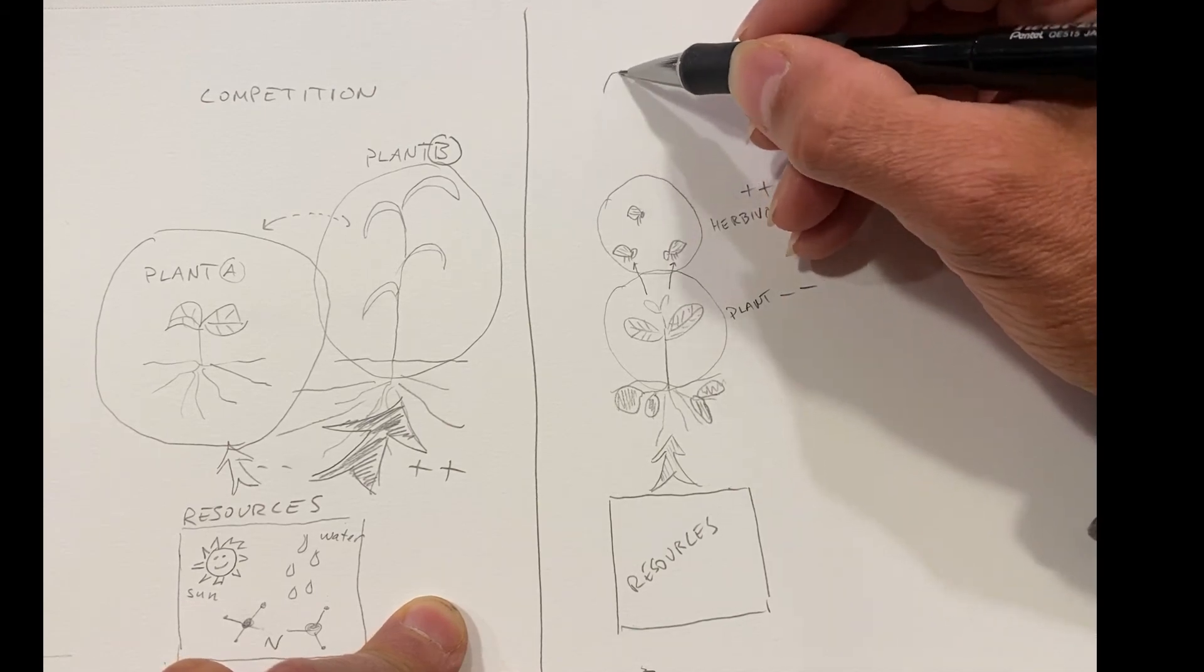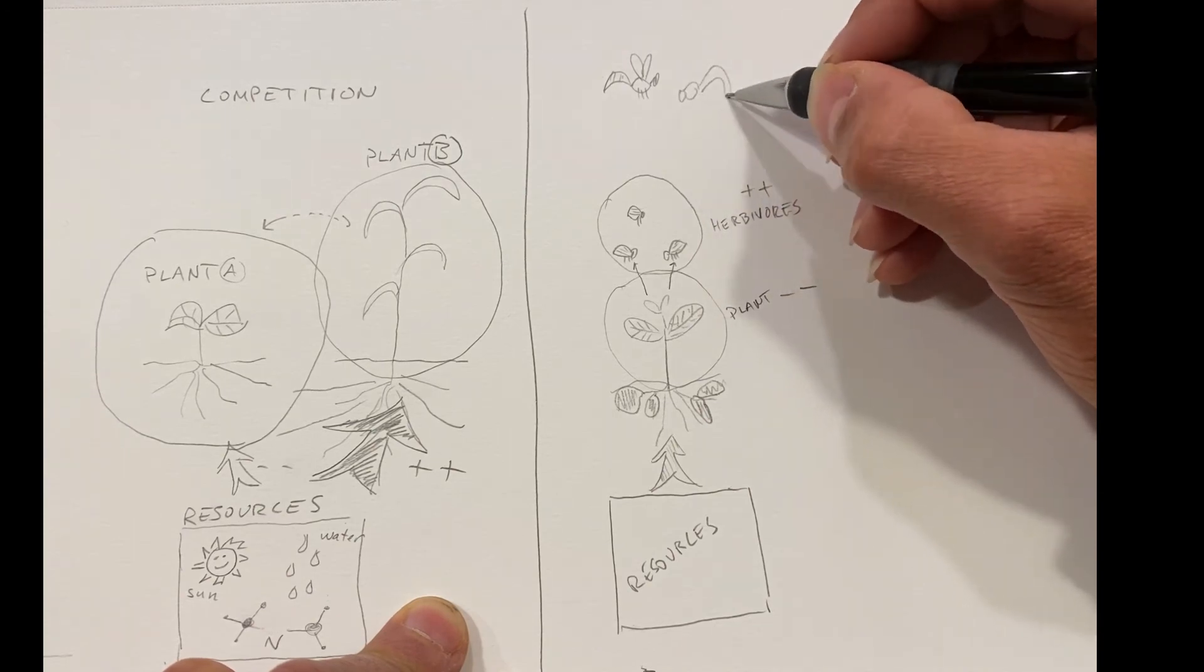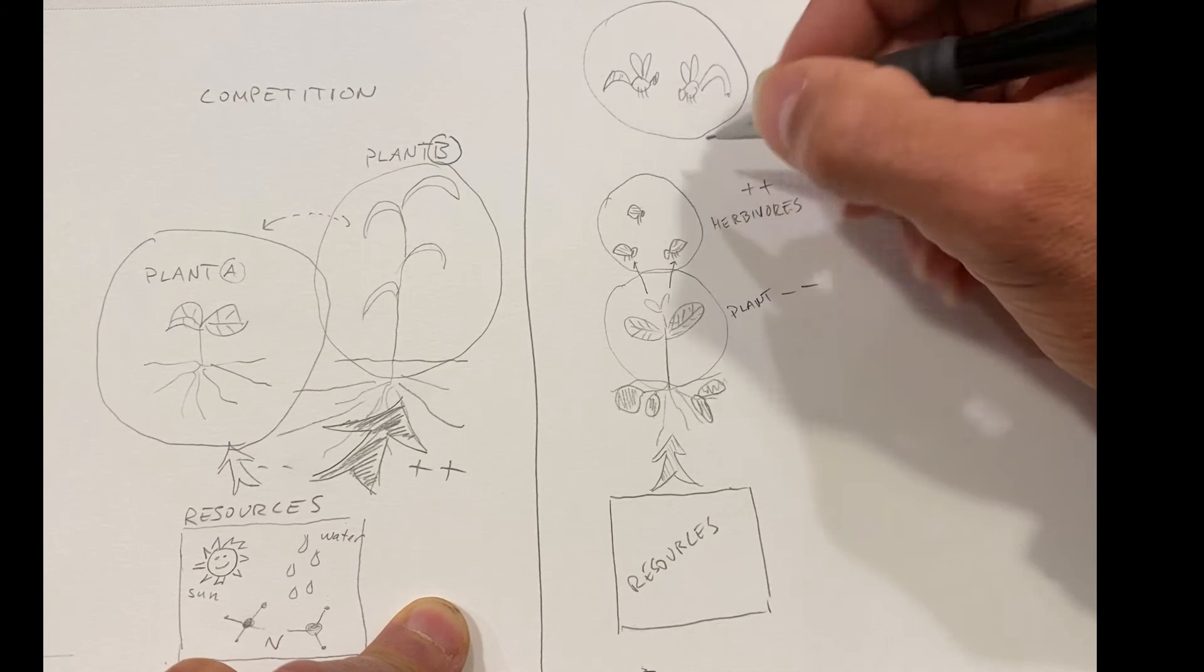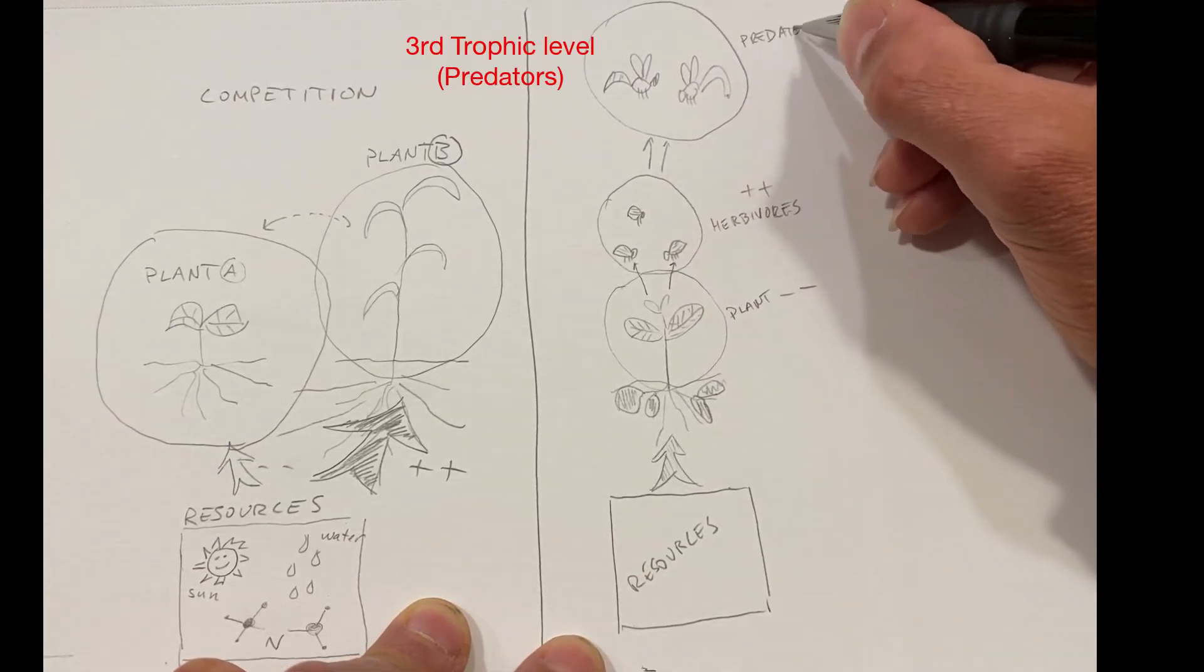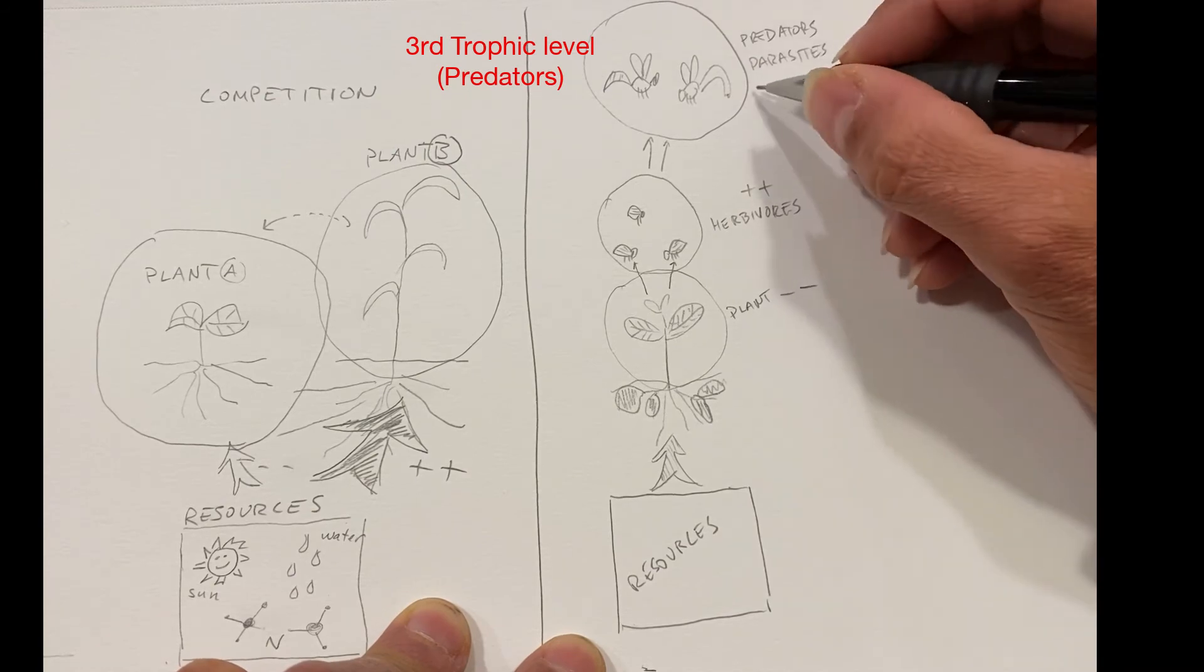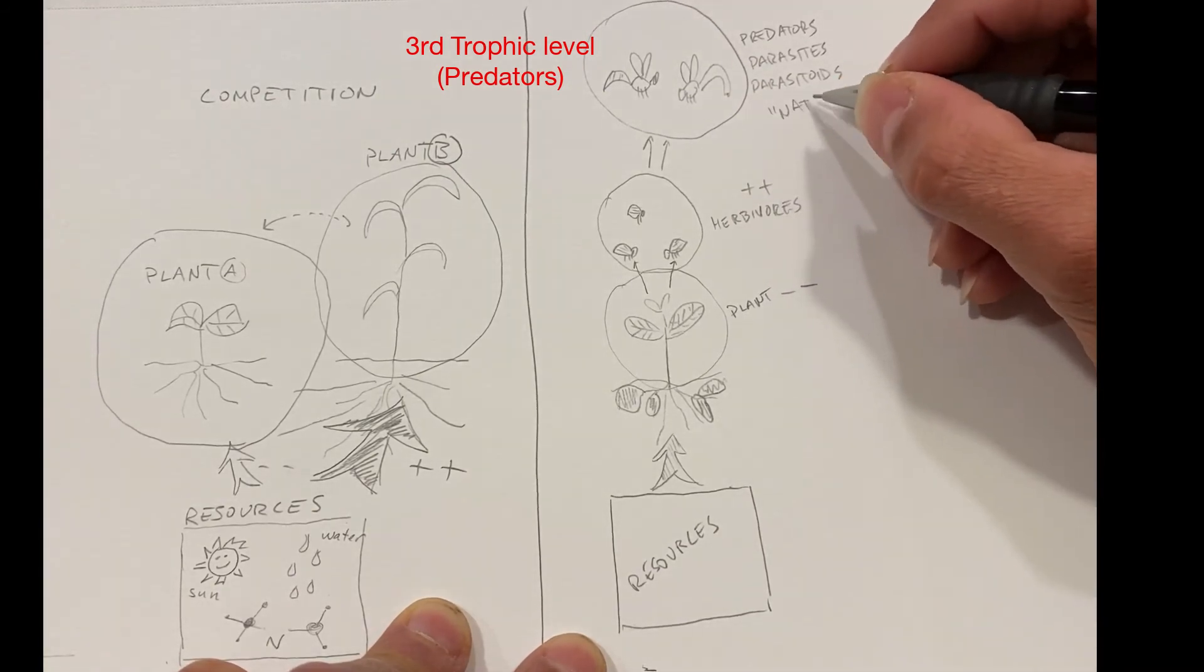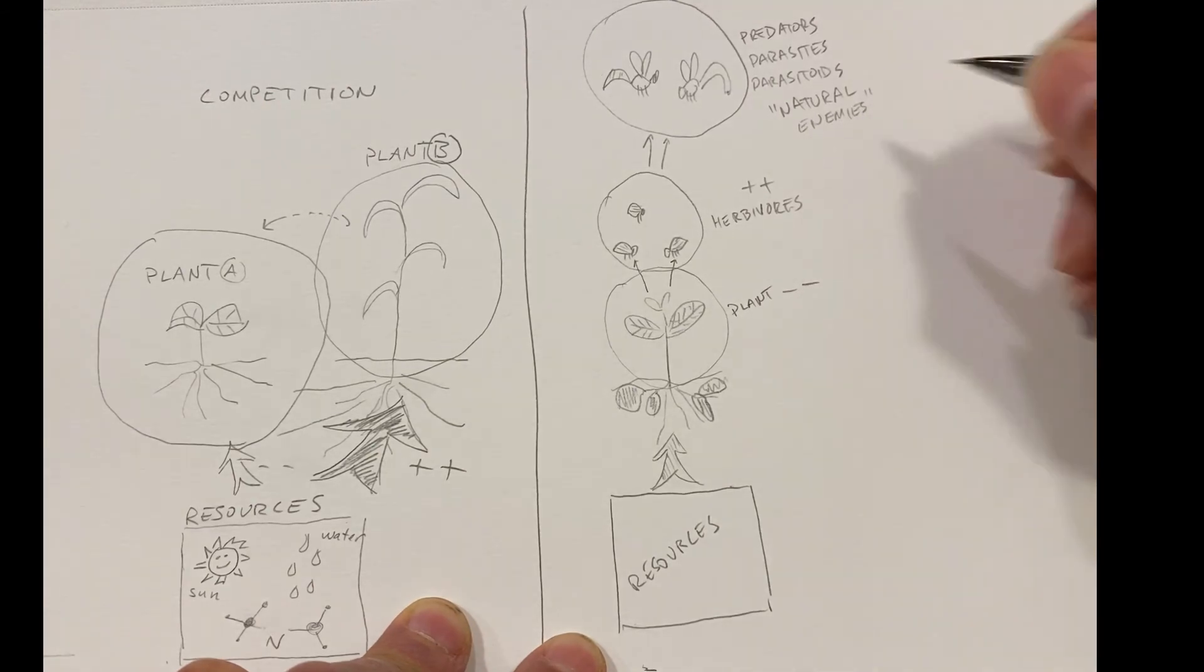Okay, let's make this situation even more interesting. Now let's add these little wasps here. These wasps are predators, or actually they're parasites, of the herbivores. And therefore, I'm going to draw these arrows that move from the herbivore circle into the predator circle. These can be predators, parasites, parasitoids, all a group of organisms that we will refer to as natural enemies. Basically, anything that has a negative effect on the herbivores are the enemies of those herbivores.